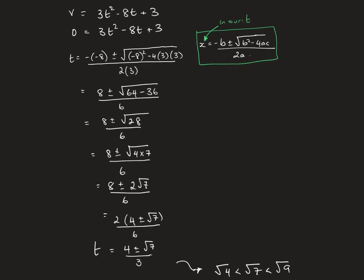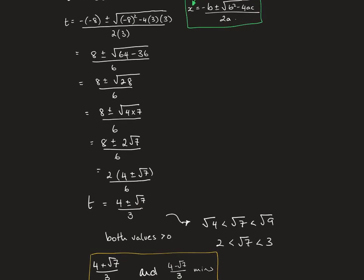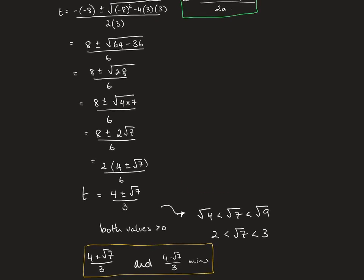To check these values by hand, note that √7 sits between √4 = 2 and √9 = 3, so √7 is between 2 and 3. This means both solutions are positive and thus possible, since our domain for T is 0 to 5. We check that both answers fit within this domain, and they do. The answers are written with their units — since T is measured in minutes, we include the unit 'minutes.'